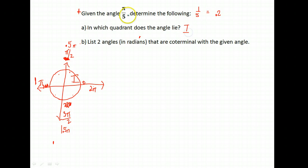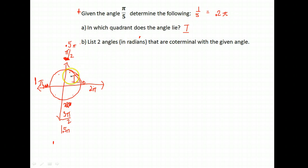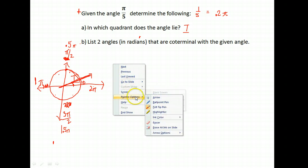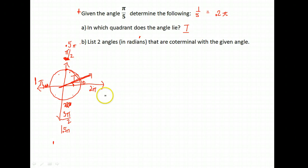This is 0.2π radians and 0.2 is located between zero and 0.5π. The next thing we're asked is to list two angles in radians that are coterminal with our given angle. For example, π/5 radians would be about here. To get a coterminal angle, we want one that ends in the same place — go around the circle one whole time and then go π/5 and stop. Every time we go around a full circle and come back, that's another coterminal angle.